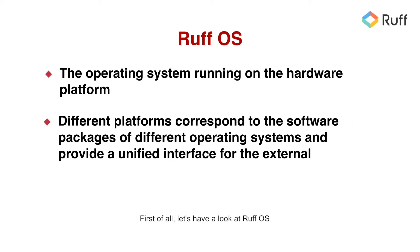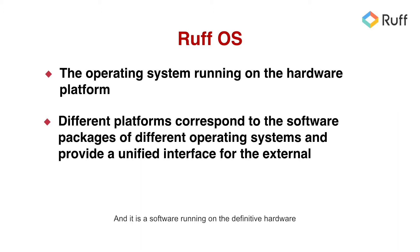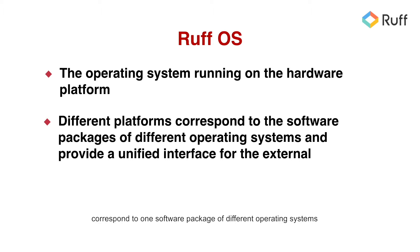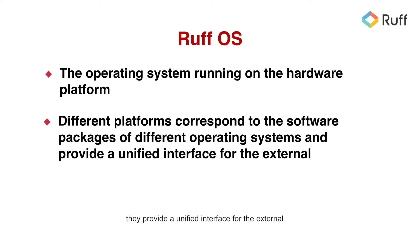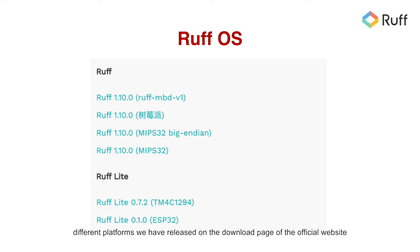First of all, let's have a look at RUF OS. It is actually an operating system running on the hardware platform, and it is a software running on the definitive hardware. So different platforms actually correspond to one software package of different operating systems. Their internal implementation is not the same, but they provide a unified interface for the external. You can find the software packages of different platforms we have released on the download page of the official website.